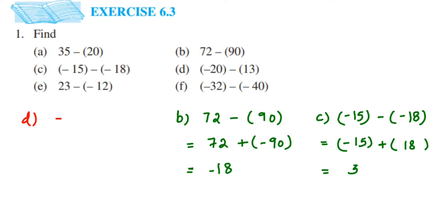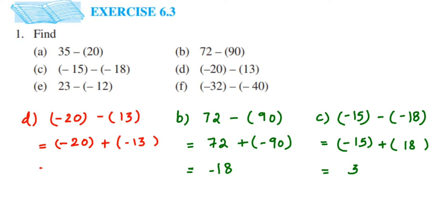The next one is minus 20 minus 13. Instead of subtracting, we add the additive inverse of 13, which is minus 13. So it becomes minus 20 plus (minus 13). Both integers are negative — same sign means we add: 20 plus 13 equals 33. Since both numbers are negative, the sign is also negative, so the answer is minus 33. When both numbers share the same sign, you don't need to compare which is greater.